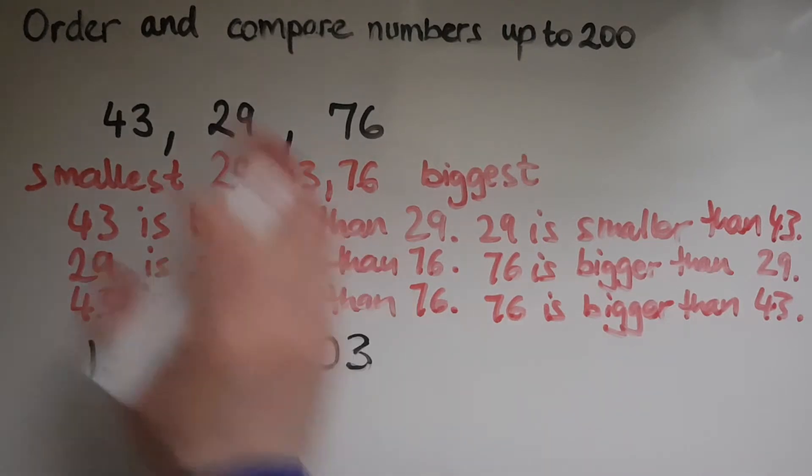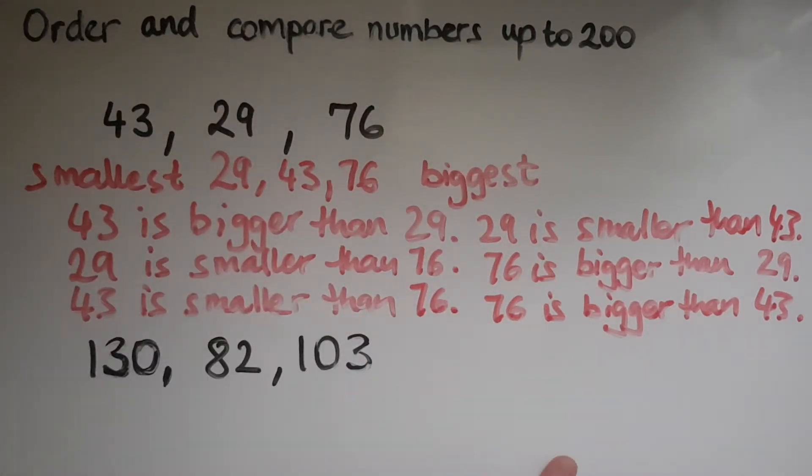So I've compared and ordered these top numbers. Now look at these ones, which are bigger. So I've got 130, 82, 103.